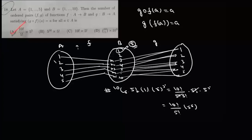Now in question number 18, we are given two sets A and B. A has 5 elements and B has 10 elements. We need to find the number of ordered pairs of the functions f and g such that g of f of x equals x. So that means after this composition, 1 should be mapped to 1, 2 should be mapped to 2, and so on and so forth.